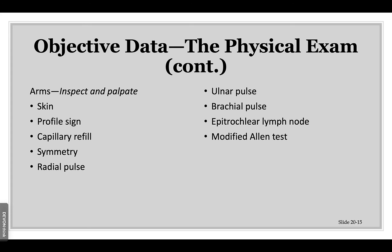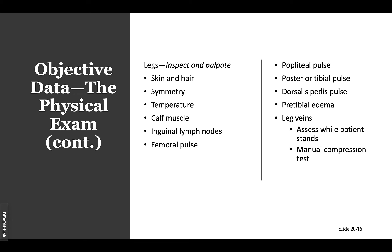Continuing with objective data — looking at the legs. Check skin and hair, symmetry from side to side, and temperature. If they throw clots to the other side, check the calf muscle. Did you know that if a blood clot is present in the leg, 50% of people do not have a positive Homans' sign? We don't check them anymore — it's not safe. 50% experience pain, edema, and erythema at the clot site; the other 50% are completely unaware. Sometimes the only sign is swelling — the right calf is bigger than the left. Also assess inguinal lymph nodes and the femoral pulse as you run the leg.